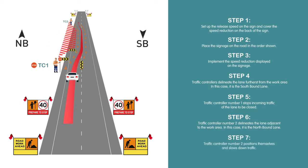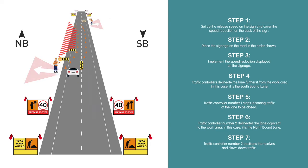Step 7: Traffic controller number 2 positions themselves and slows down traffic. Don't forget your escape route and that it can change regularly.